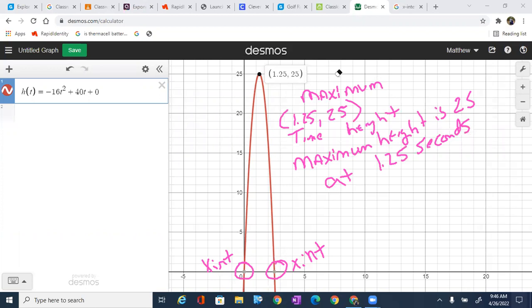So what's another key feature? Well, the x-intercepts. So what do our x-intercepts mean? Well, in the context of our problem, the x-intercept of 2.5 just simply means the ball hits the ground at 2.5 seconds. So the ball hits the ground at 2.5 seconds. And when did it leave the ground? Well, it left the ground right here at 0 seconds.